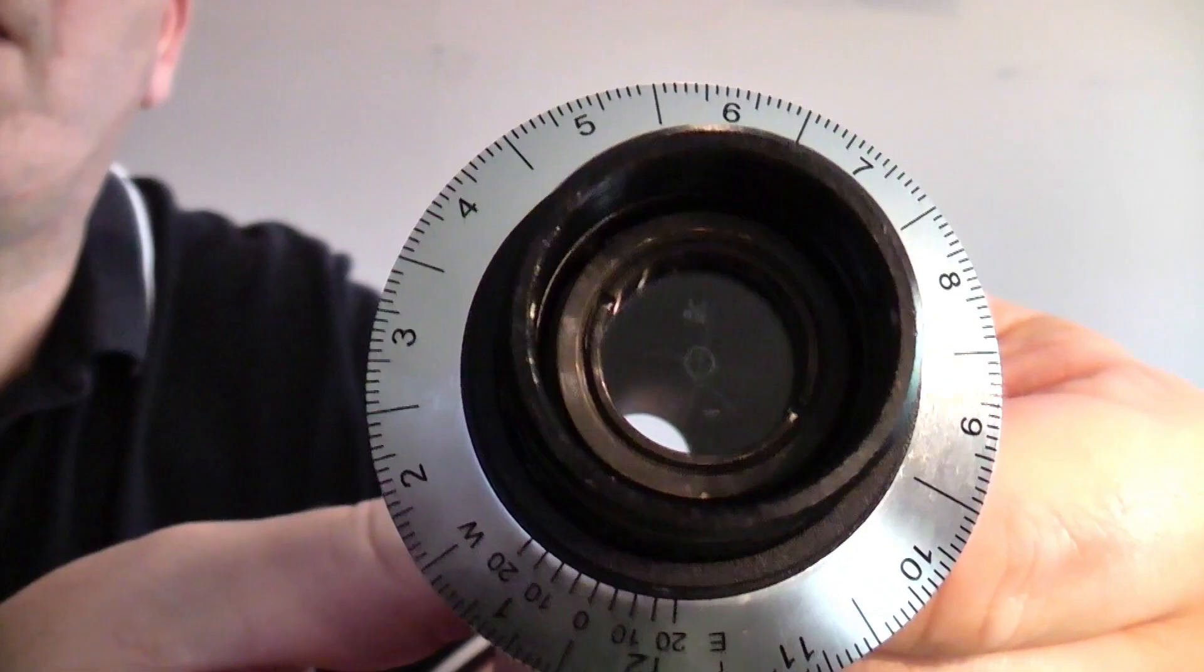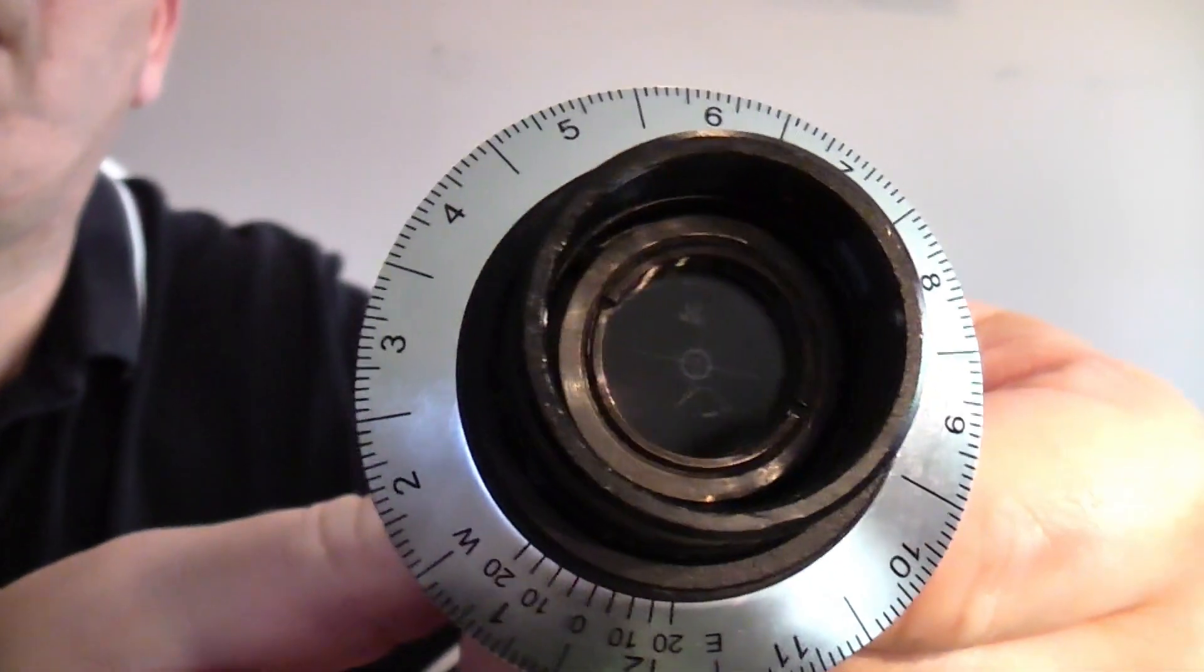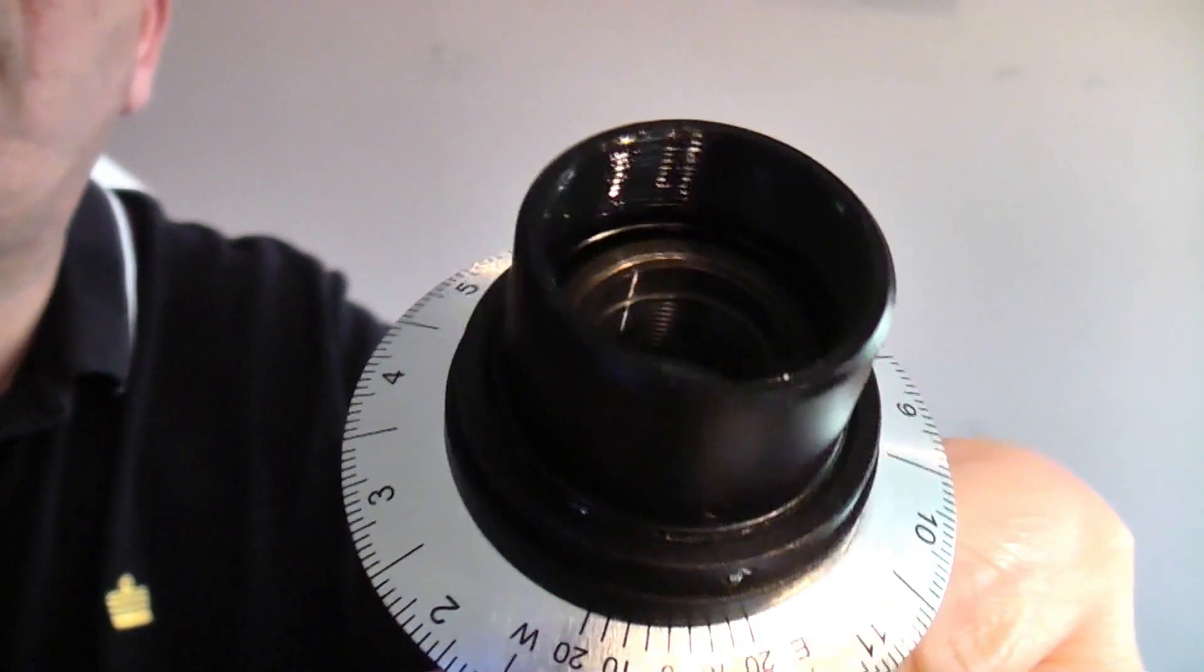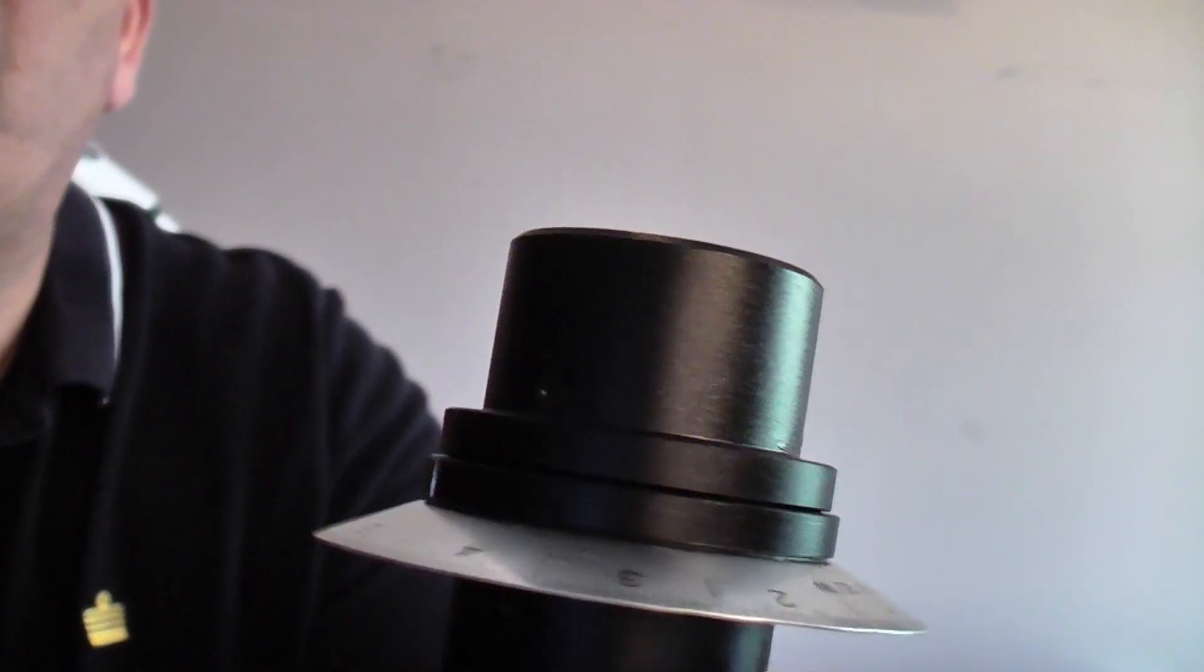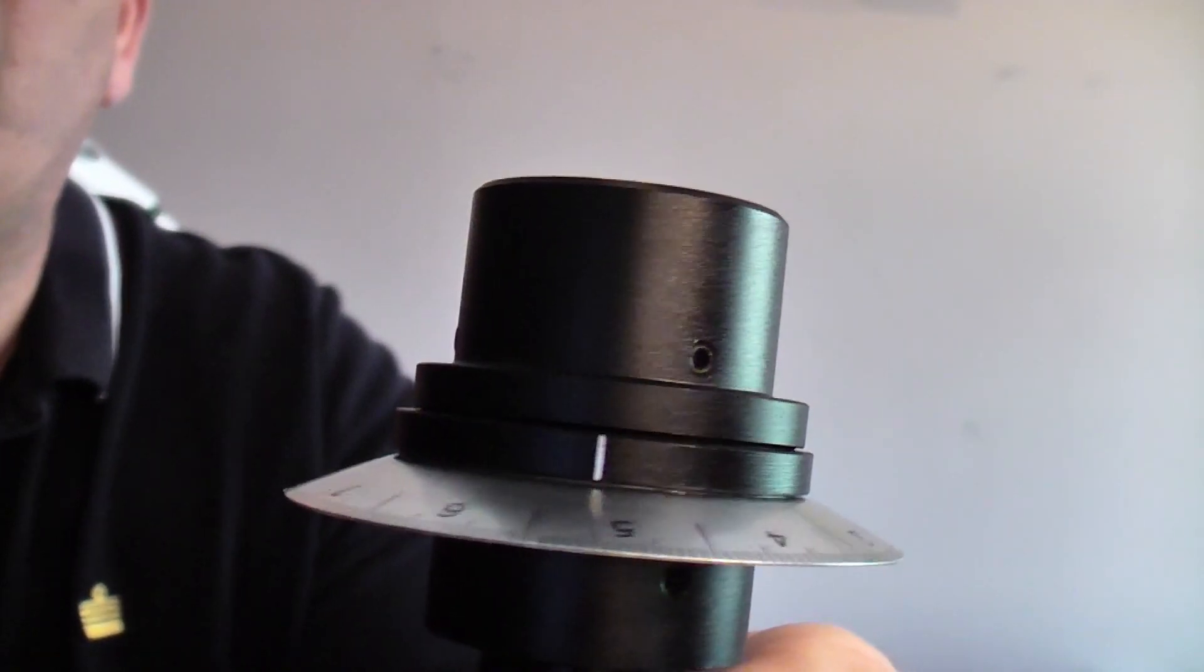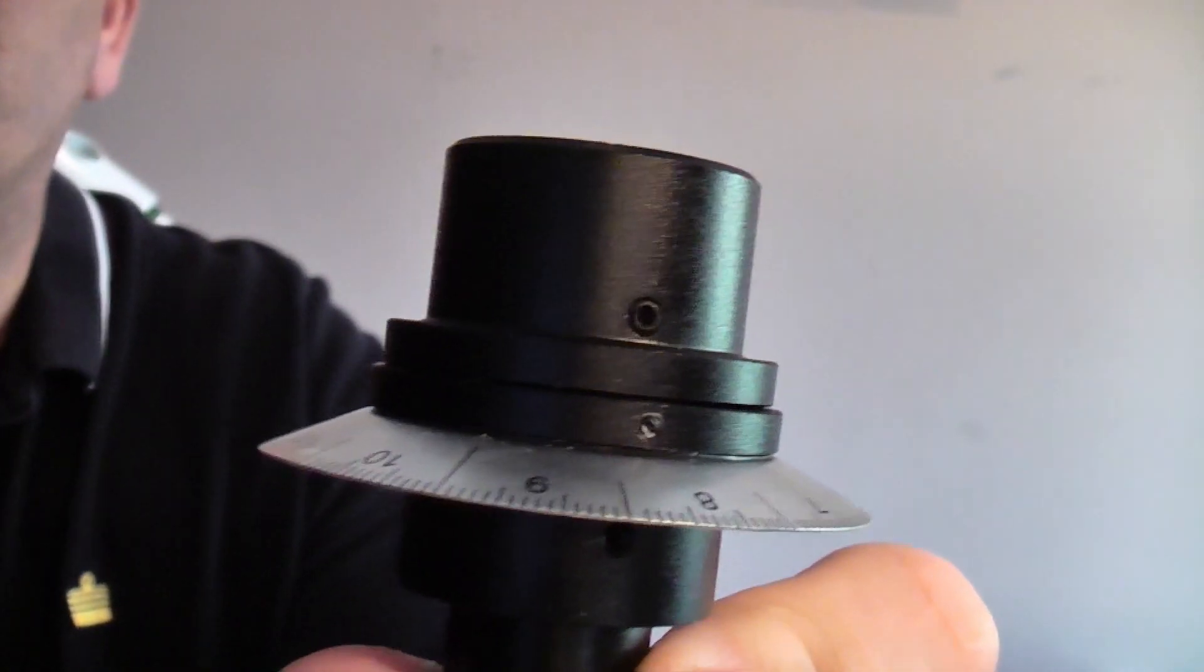So inside there is a graticule which is a metal ring holding a glass graticule with the markings on it. The graticule is held in with three grub screws at 120 degrees apart on the outside of the scope.